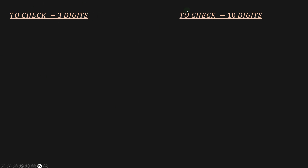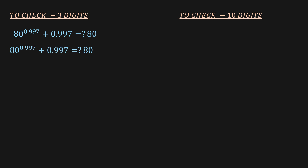I'm going to check first with three digits and then with ten digits to see what we get. Replacing the value of x in the original equation — remember the original equation is 80^x + x = 80 — we substitute in our approximation and verify the result.